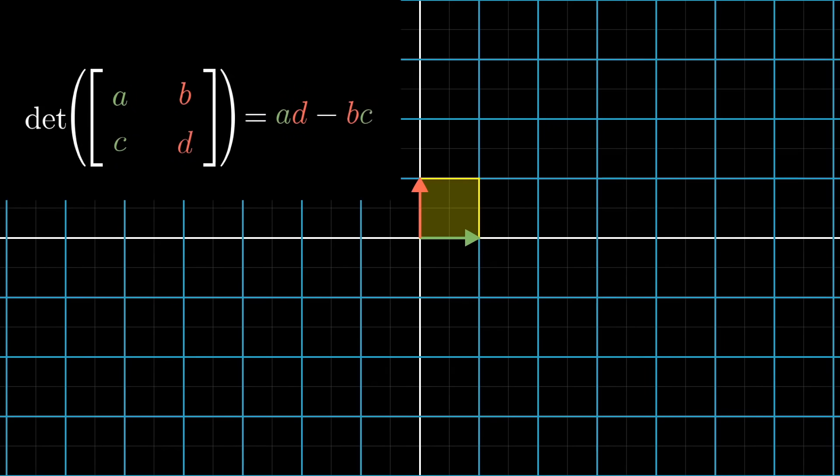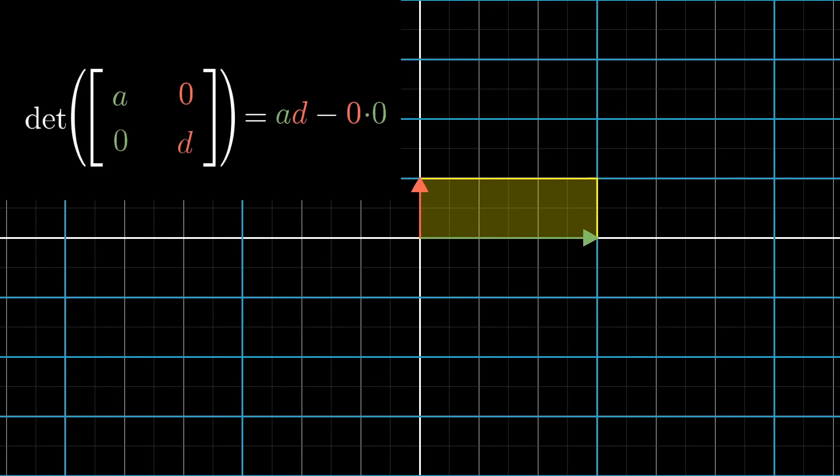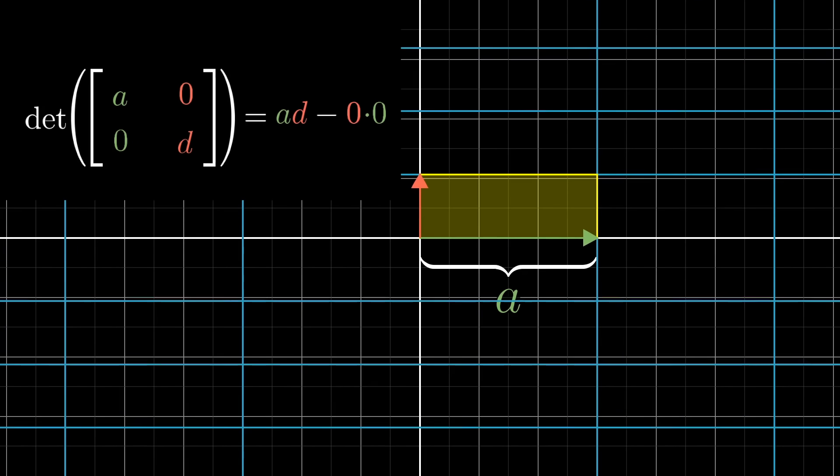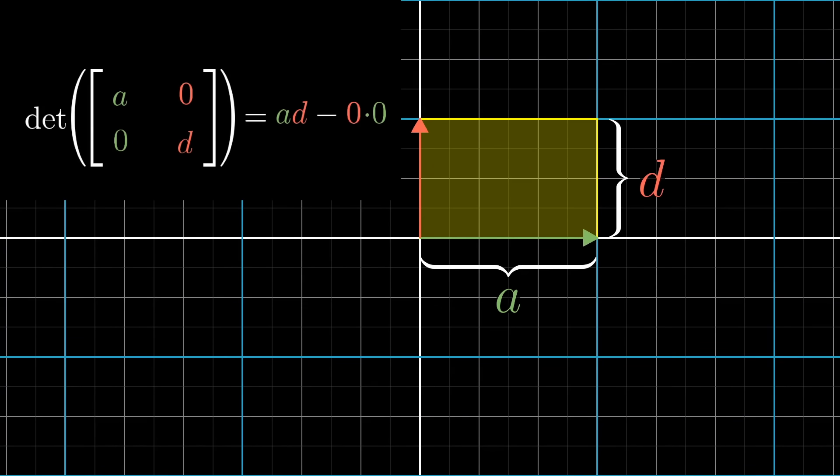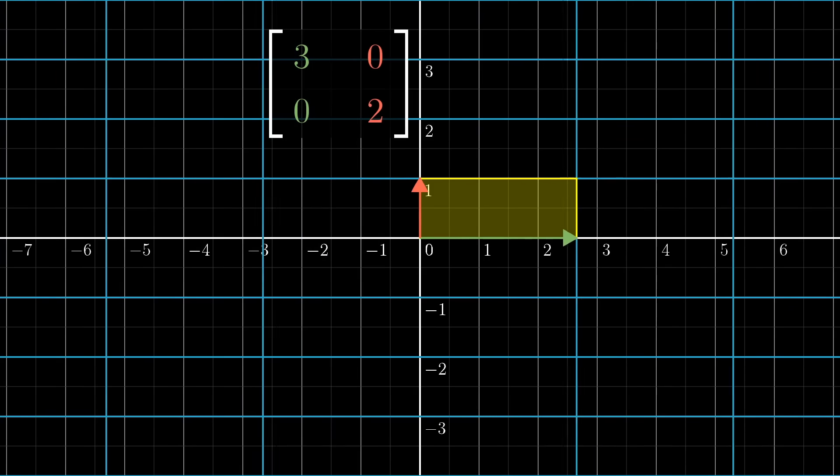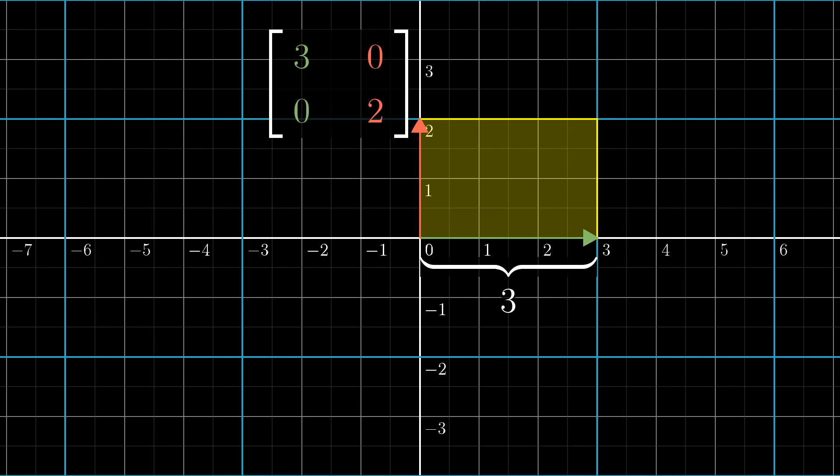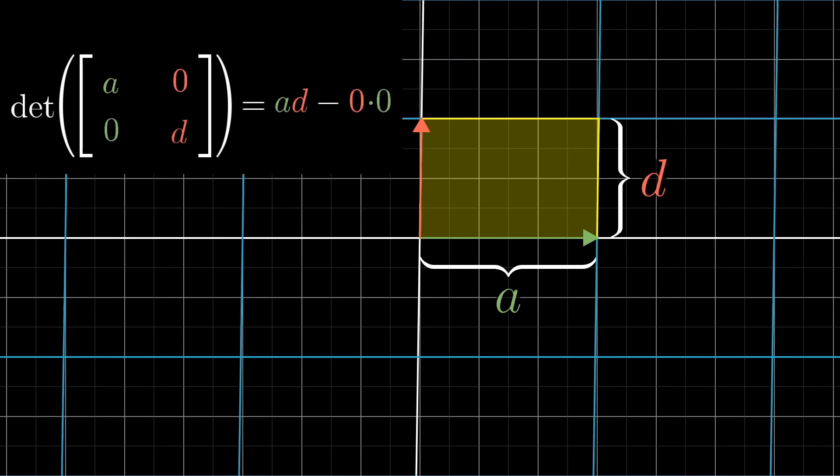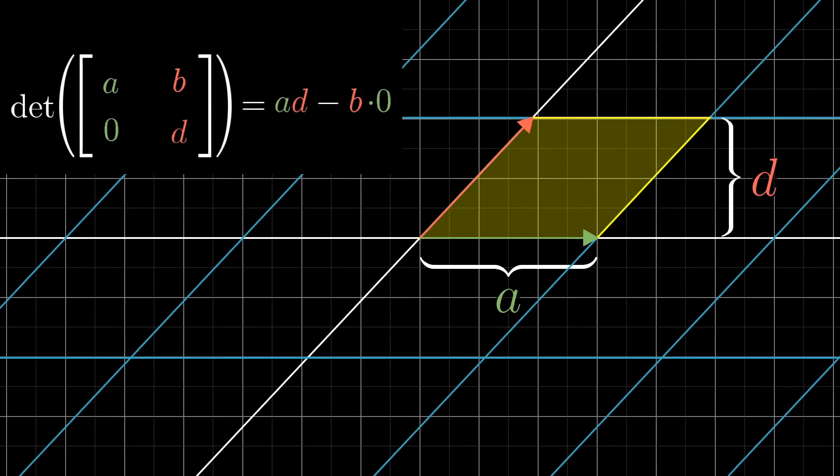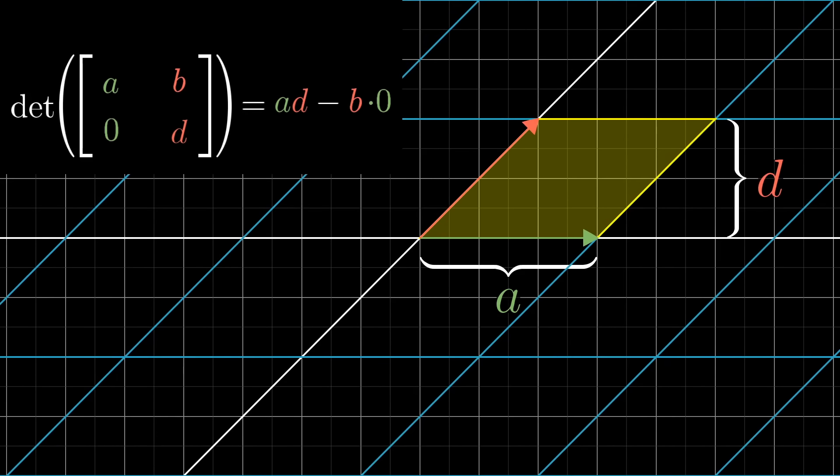Here's part of an intuition for where this formula comes from. Let's say that the terms B and C both happen to be zero. Then, the term A tells you how much i-hat is stretched in the x-direction, and the term D tells you how much j-hat is stretched in the y-direction. So, since those other terms are zero, it should make sense that A times D gives the area of the rectangle that our favorite unit square turns into, kind of like the 3, 0, 0, 2 example from earlier. Even if only one of B or C are zero, you'll have a parallelogram with a base A and a height D, so the area should still be A times D.